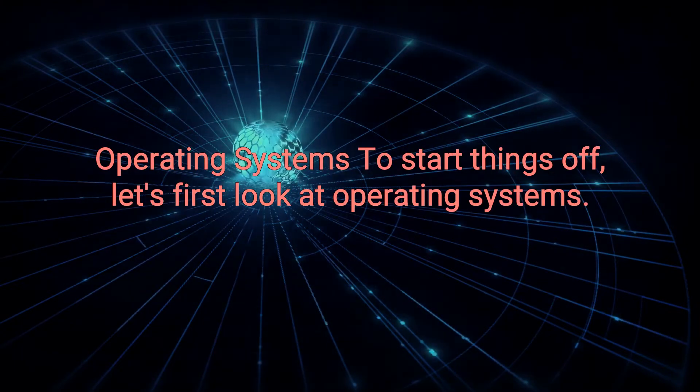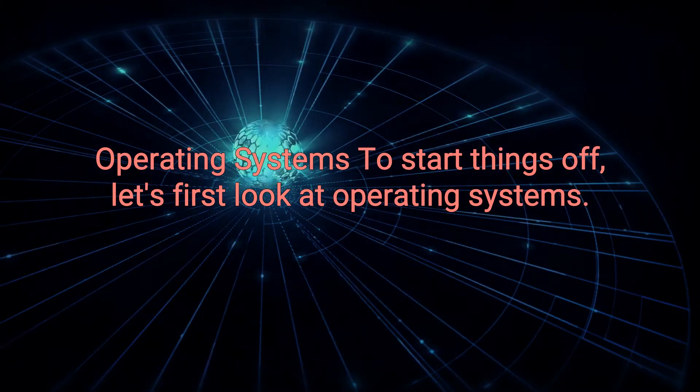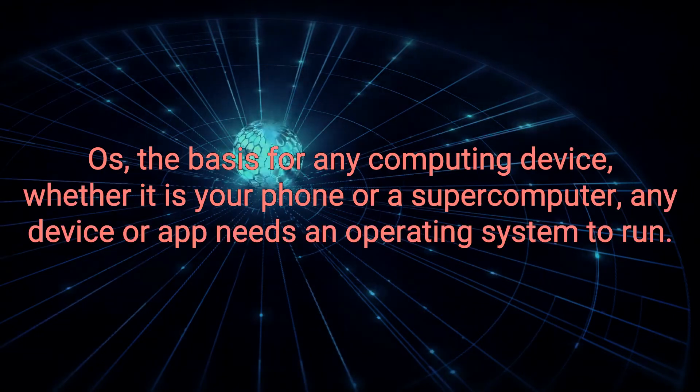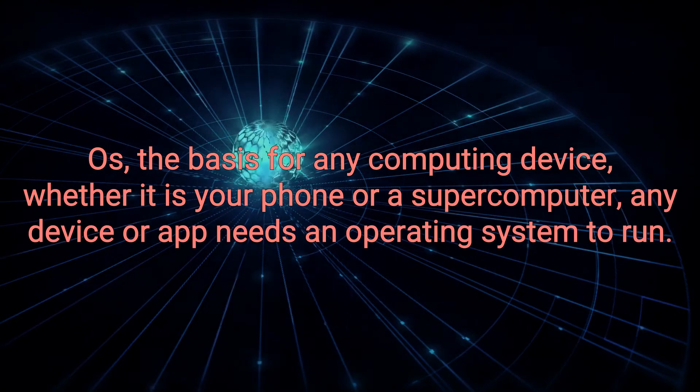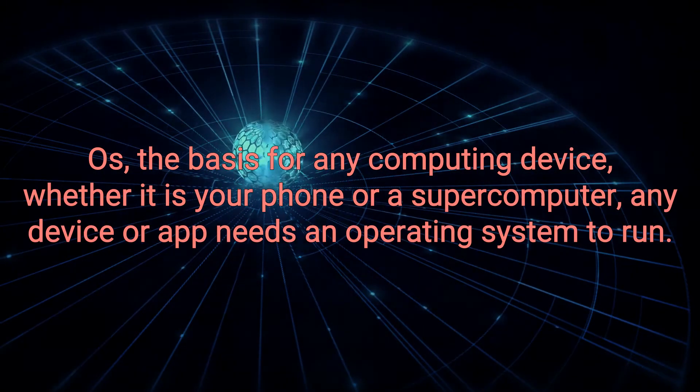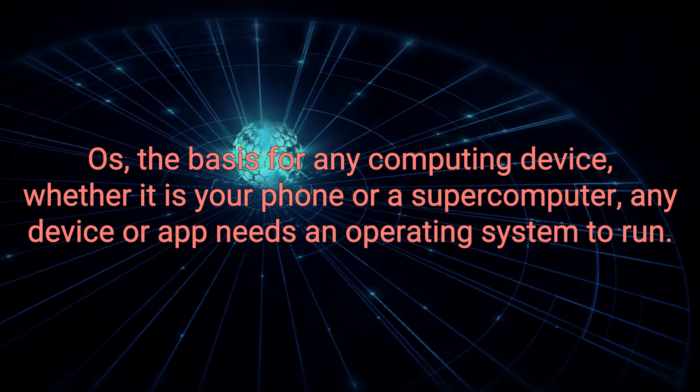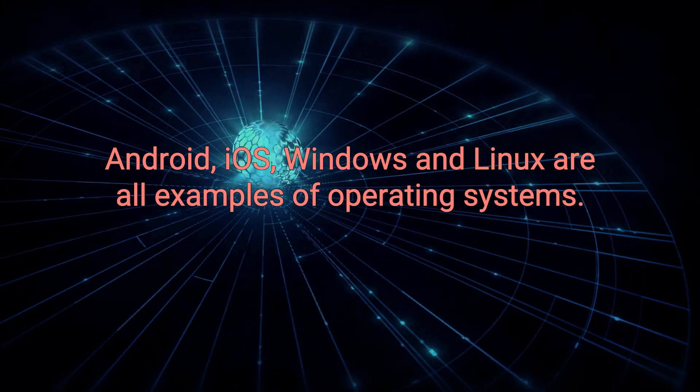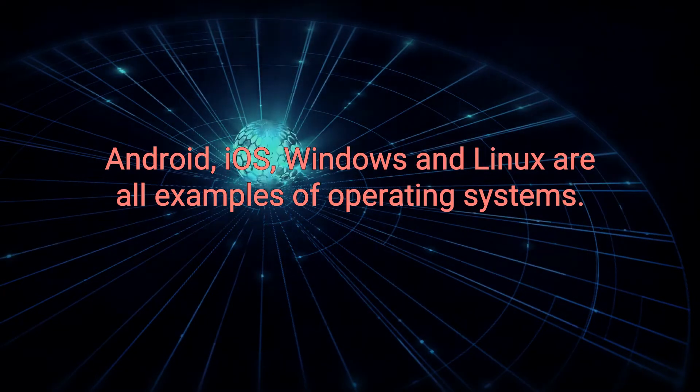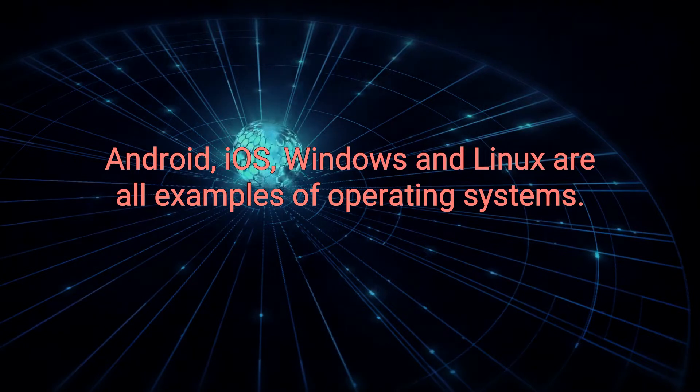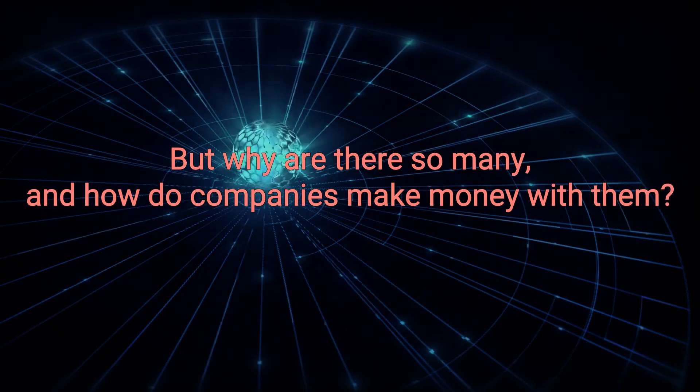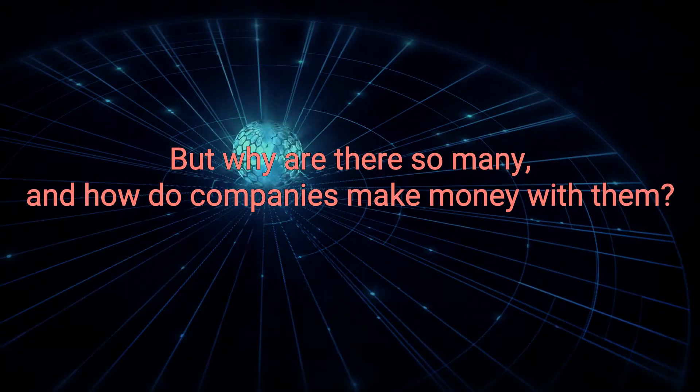Operating Systems. To start things off, let's first look at operating systems, OSs, the basis for any computing device. Whether it is your phone or a supercomputer, any device or app needs an operating system to run. Android, iOS, Windows, and Linux are all examples of operating systems. But why are there so many? And how do companies make money with them?